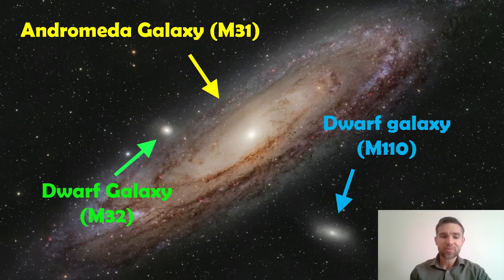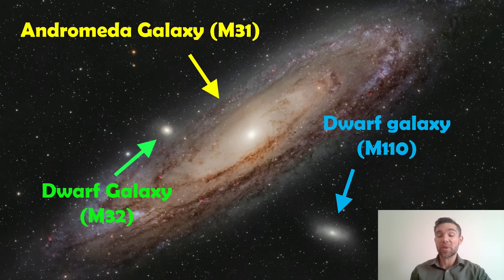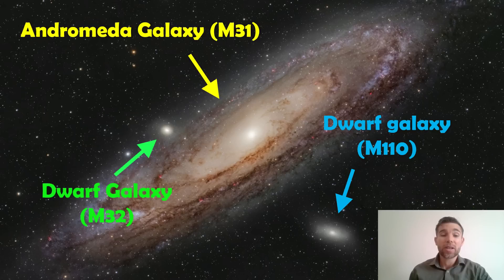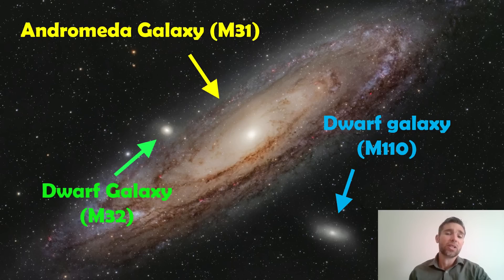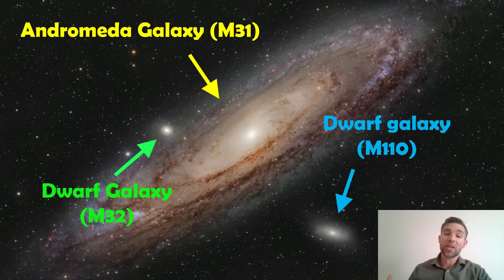As an example, the Andromeda galaxy is our largest nearby spiral galaxy and has two dwarf satellite galaxies — M32 and M110 — which you can actually see with your own telescope under really good seeing conditions. These are satellite galaxies of Andromeda and may end up merging with it in the future. We also know that the Andromeda galaxy itself is going to merge with the Milky Way.